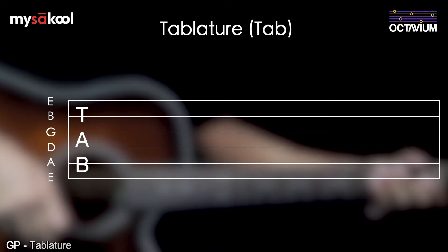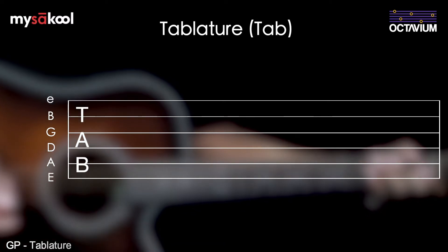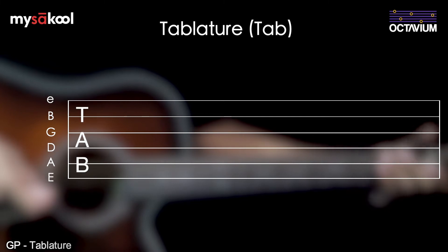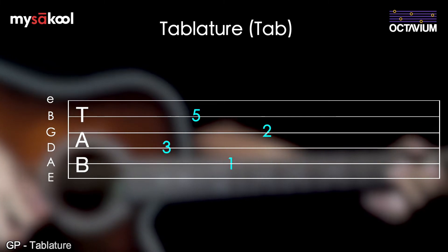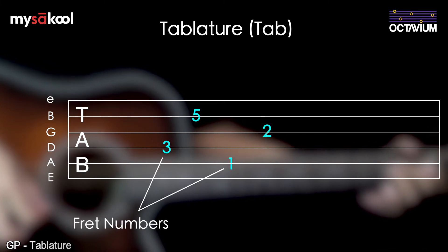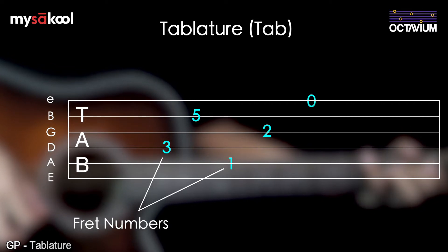The names of the strings are written at the start of each line, with a lowercase 'e' sometimes used to differentiate the first string from the sixth string. On these strings, numbers are used to represent which fret you need to place the finger at, with zero denoting an open string.